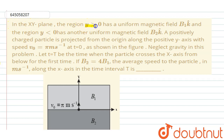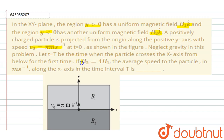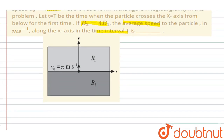In the xy-plane, the region y > 0 has a uniform magnetic field B1 k-cap, and the region y < 0 has another uniform magnetic field B2 k-cap. A positively charged particle is projected from the origin along the positive y-axis with speed v0 = 5 m/s at t = 0. Neglect gravity. Let t = T be the time when the particle crosses the x-axis from below the first time. If B2 = 4B1, find the average speed of the particle along the x-axis in time interval T.